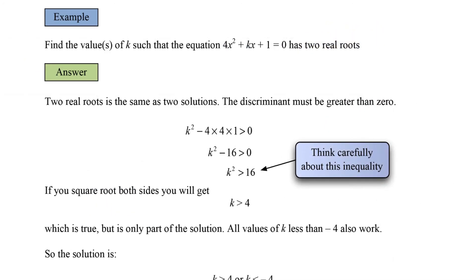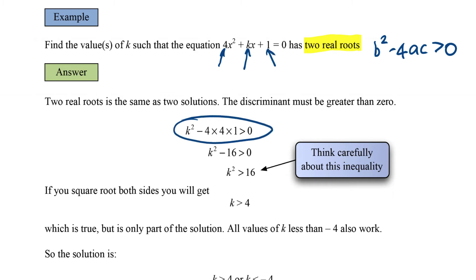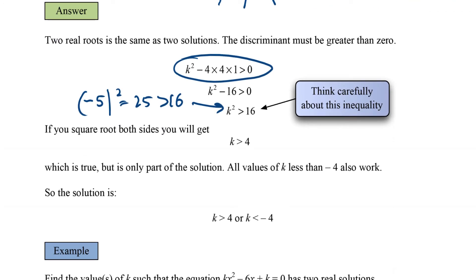Here's another similar example: find the values of k such that the equation has two real roots. Two real roots means the discriminant has to be greater than zero, so b squared minus 4ac greater than zero. Here a is 4, b is k, and c is 1. That gives us k squared minus 16 greater than zero, so k squared is greater than 16. Just square rooting both sides gives k greater than 4, but we're missing some values — for example, k equals negative 5 gives 25, which is certainly greater than 16. So it's also all k values less than negative 4.